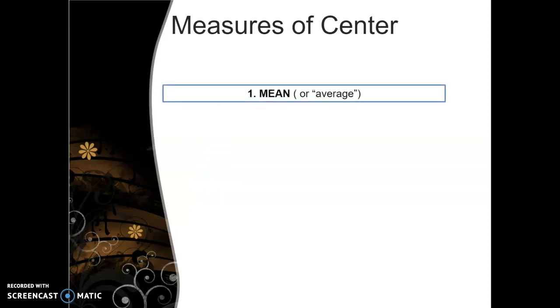Let's get started. So looking at mean first, the mean of a dataset is often called the average of the dataset.